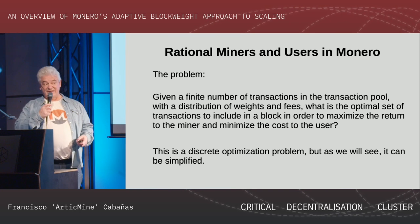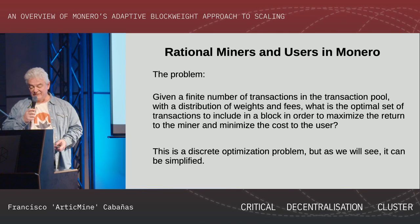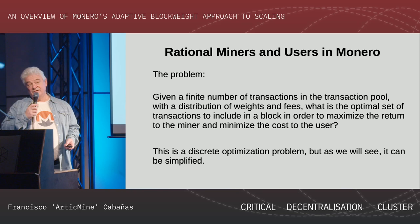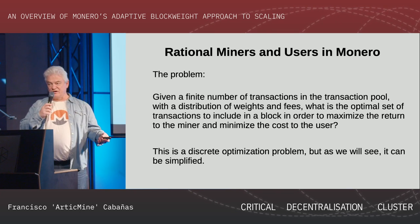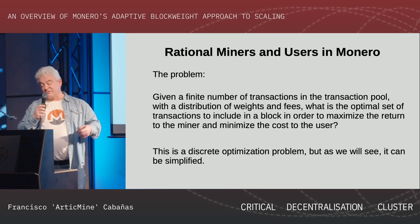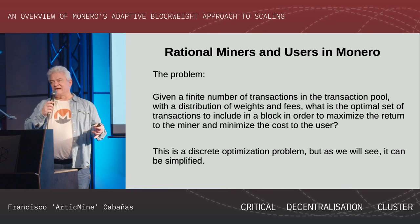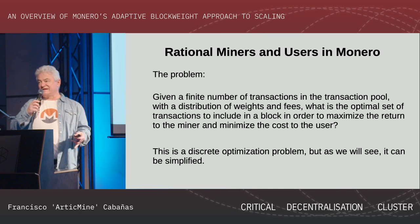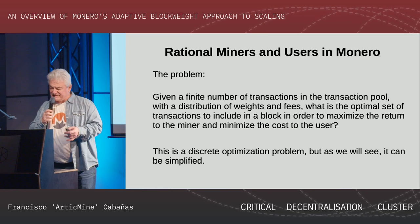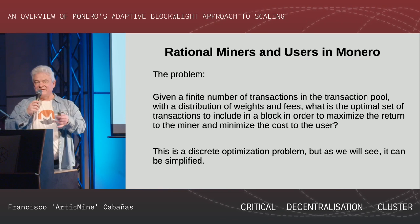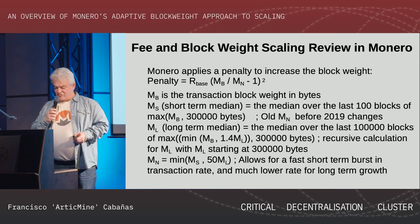The problem is: you have a finite number of transactions in the pool with a certain distribution of fees and weights, and you're a miner figuring out which ones to put in the block to maximize your return. The full problem is actually a discrete optimization problem that can be solved exactly — it involves large matrices — and you have to find the optimal transaction mix.